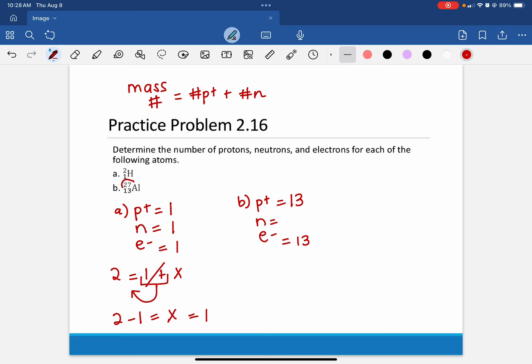We are told what the mass number is here. It's 27. So we're going to use our mass number formula at the top. 27 equals the number of protons plus the number of neutrons.